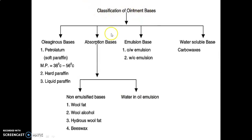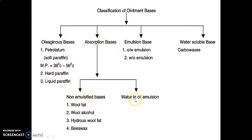Next, the classification of ointment bases has four main classes: oleaginous base, absorption base, emulsion base, and water-soluble base. In the oleaginous base, the first type is petroleum — that is, soft paraffin — having a melting point of 38°C to 56°C; second is hard paraffin; and third is liquid paraffin. Absorption bases are classified into two types: non-emulsified bases, and water-in-oil (W/O) emulsion, in which water is the internal phase while oil acts as the external phase.